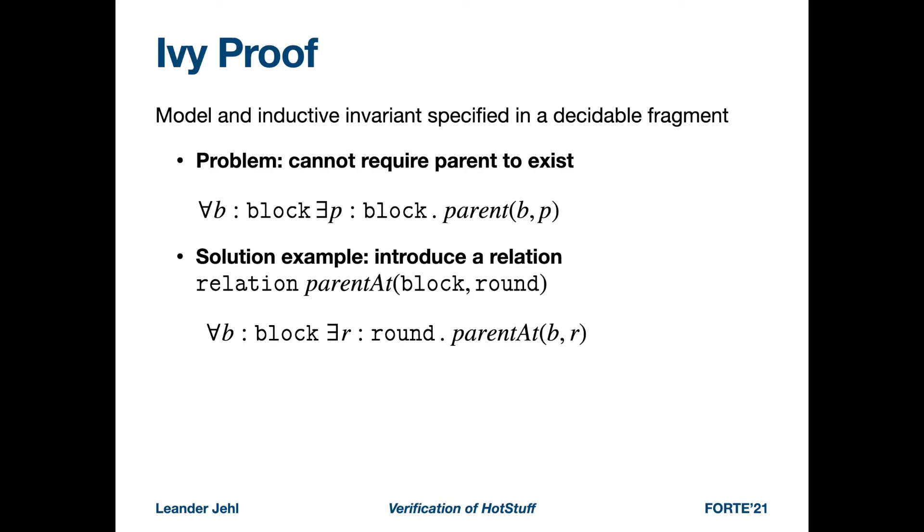We solved this by adding additional predicates to our model. For example, adding the parent-at predicate that connects a block to the round of its parent, we could require that for every block B there exists a round R such that parent-at holds for B and R. This lies within the fragment because blocks and rounds are different sorts. In the proof, combining several such predicates allowed us to write an inductive invariant that was in the fragment. Please see the Forte paper for details.